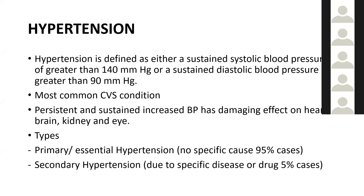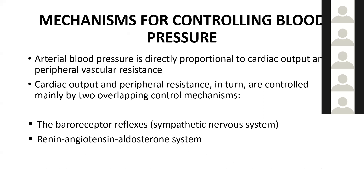Persistent sustained increased blood pressure has damaging effects on the heart, brain, kidney, and eye — similar to diabetes, which also affects these same organs. There are two types of hypertension: primary essential hypertension, which has a non-specific cause in 95% of cases, and secondary hypertension, which is due to specific diseases or drugs, accounting for 5% of cases.